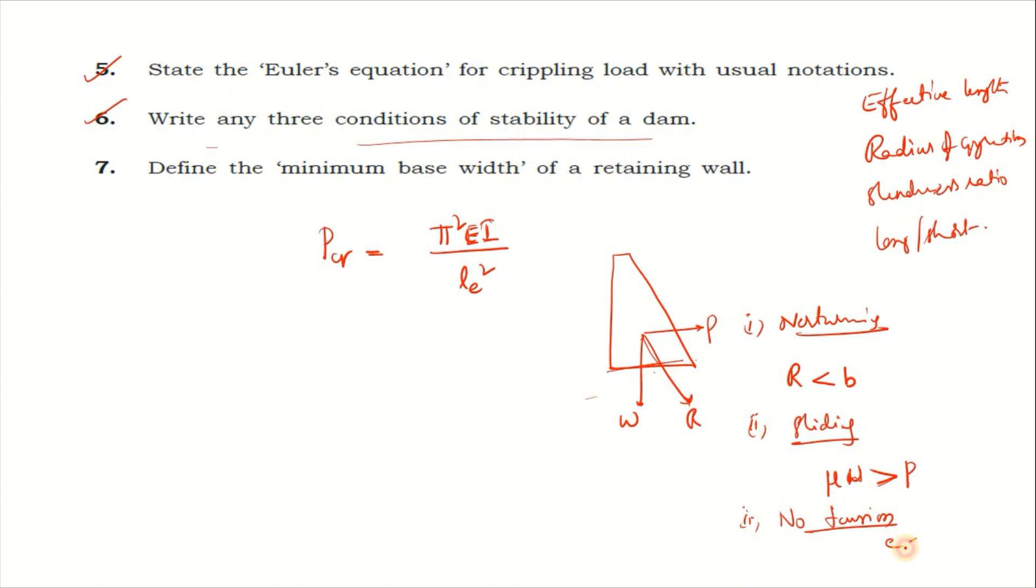Frictional force between dam and soil must be greater than horizontal water pressure. Next, for no tension to develop in the base of the dam, e should be less than or equal to b by 6, the base width.